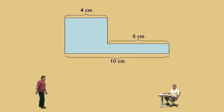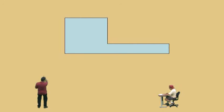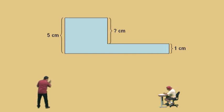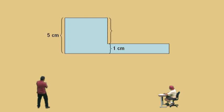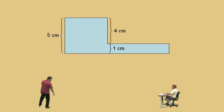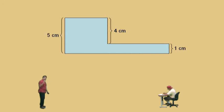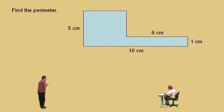Now we're going to look at our vertical lengths. We have 5 centimeters there, 1 centimeter over there, and we need that length right there. This whole thing is 5, and we know this little piece here is 1. All the way up is 5, and if that's 1, what's that missing side length, Charlie? Four. It's 4 — because 1 plus 4 is 5. So now we're going to label our missing length there as 4 centimeters.